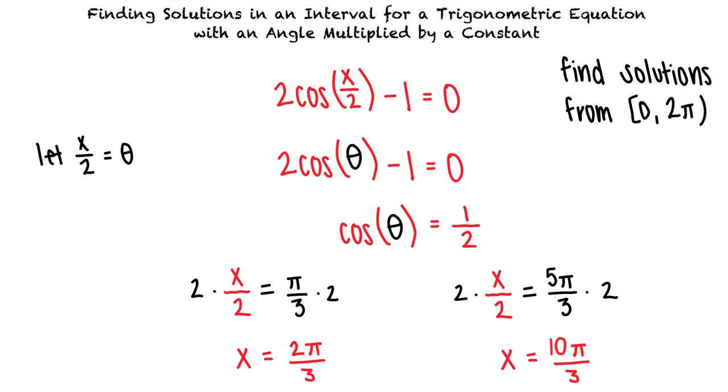So is this our final answer? Let's take a look at the interval we are trying to solve in. Our interval includes the value 0 but does not include the value 2π. Since 10π thirds is greater than 2π and our interval excludes values greater than or equal to 2π, this value is not a solution to our equation.